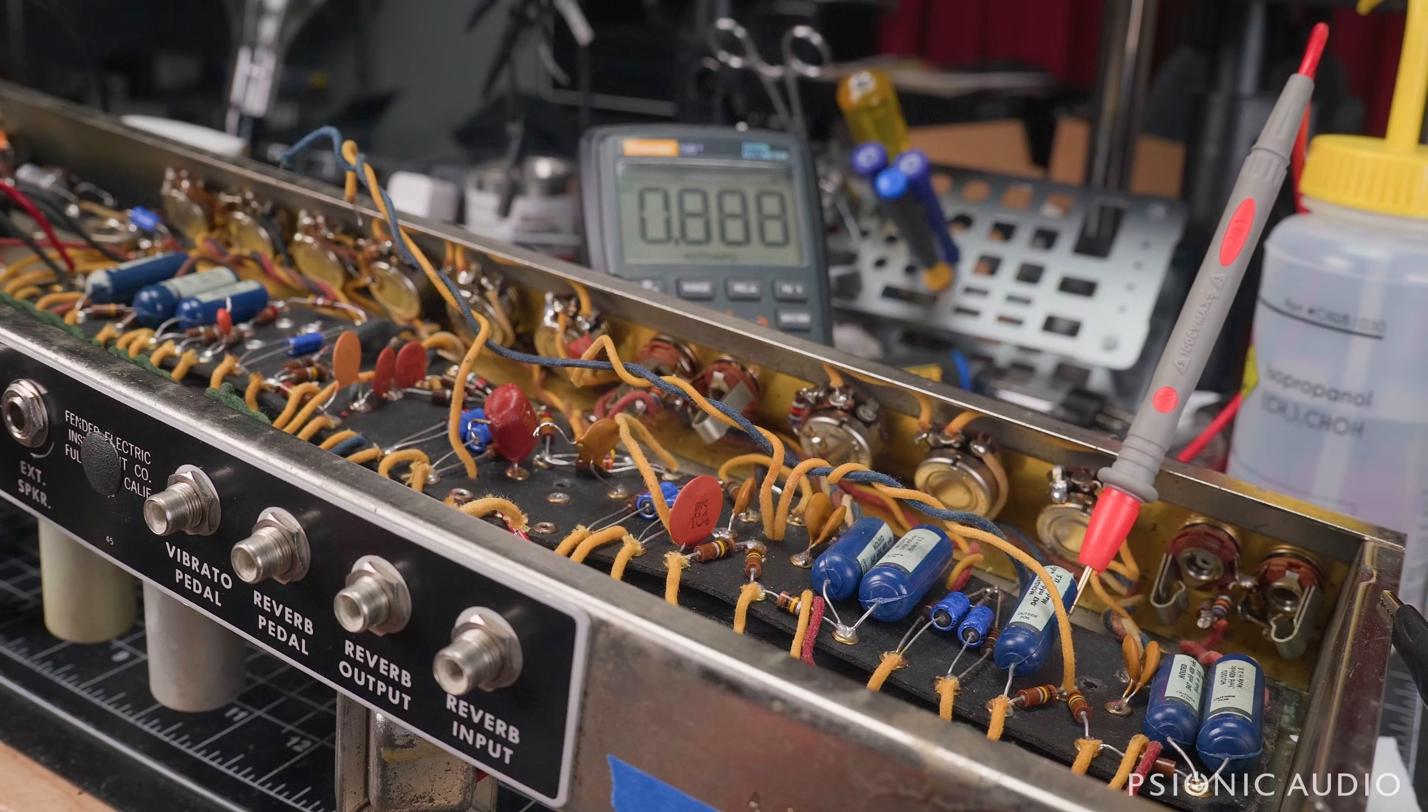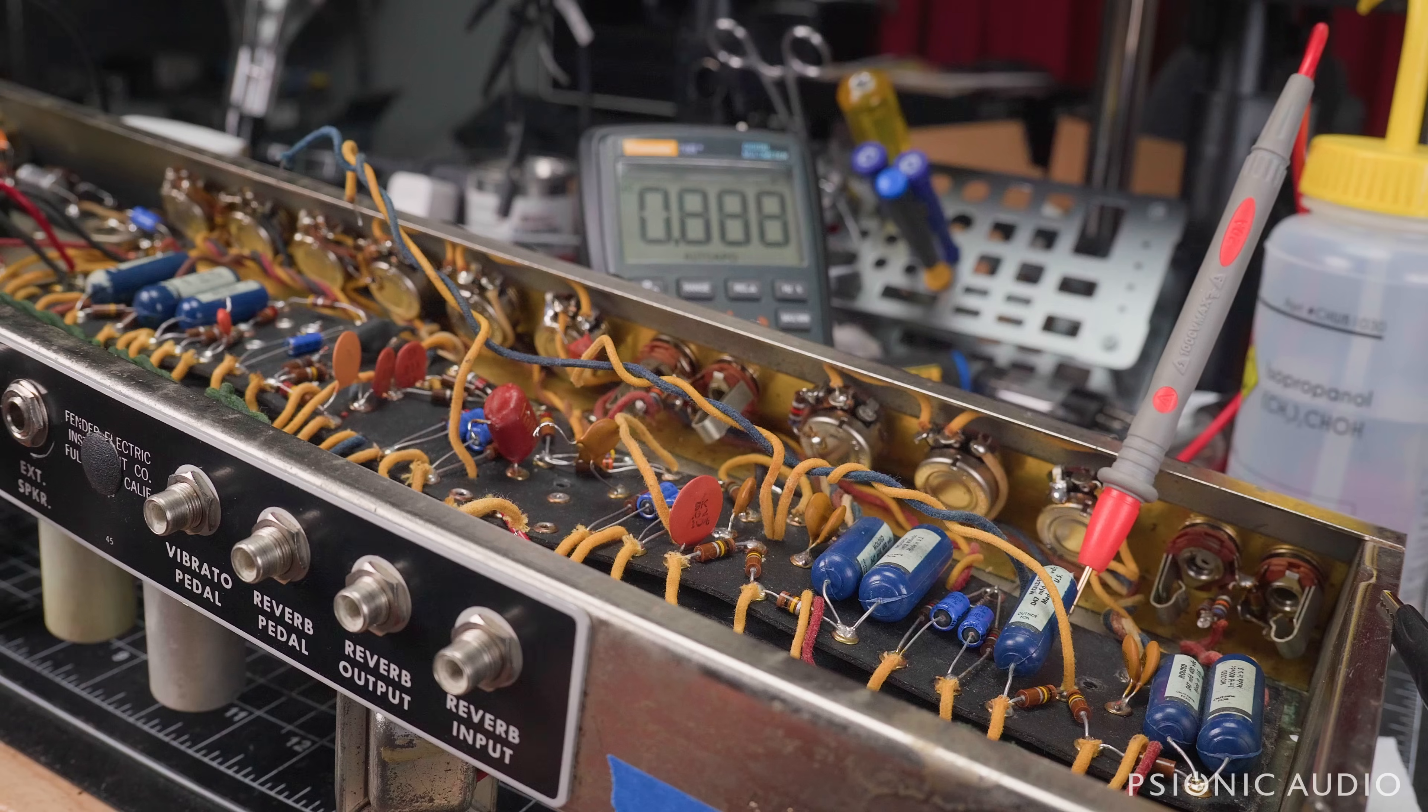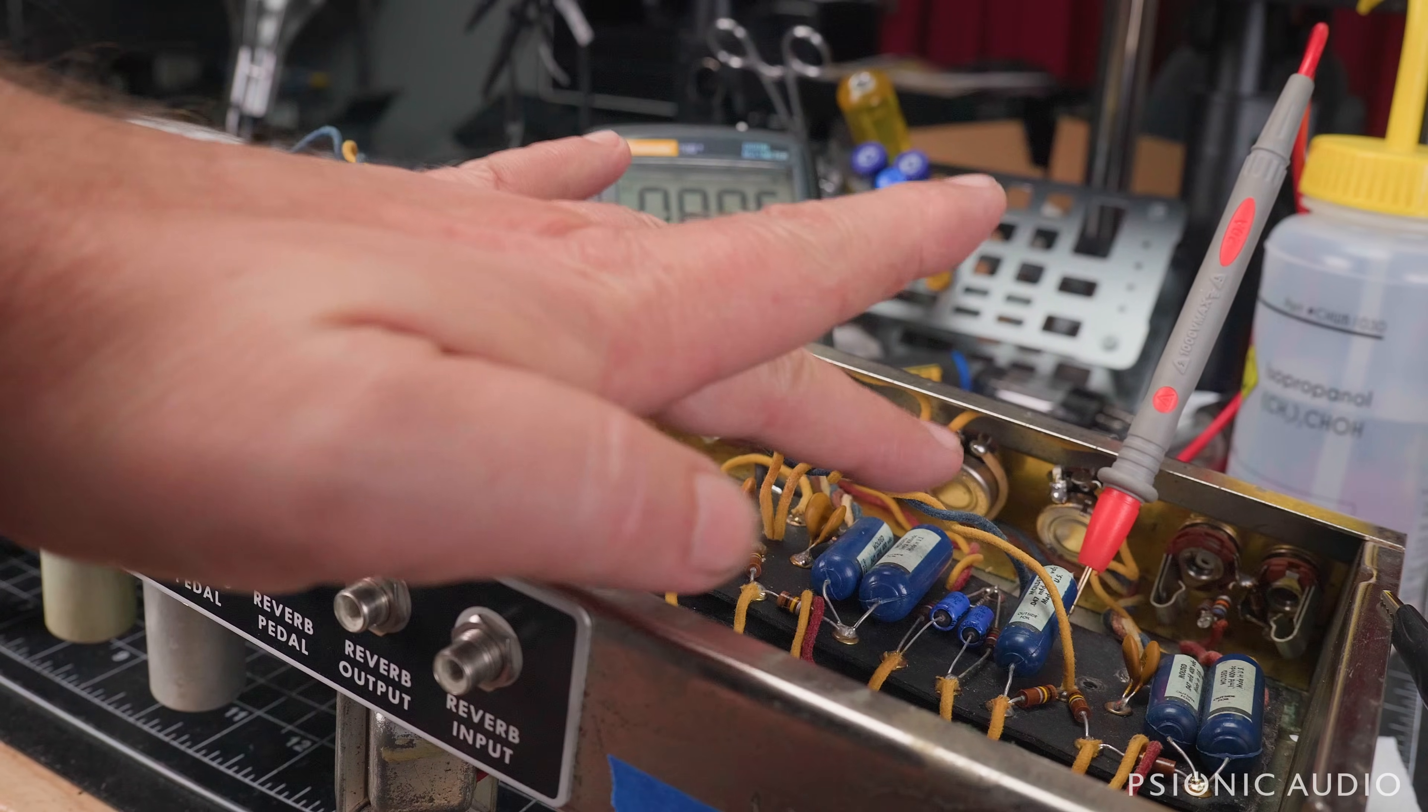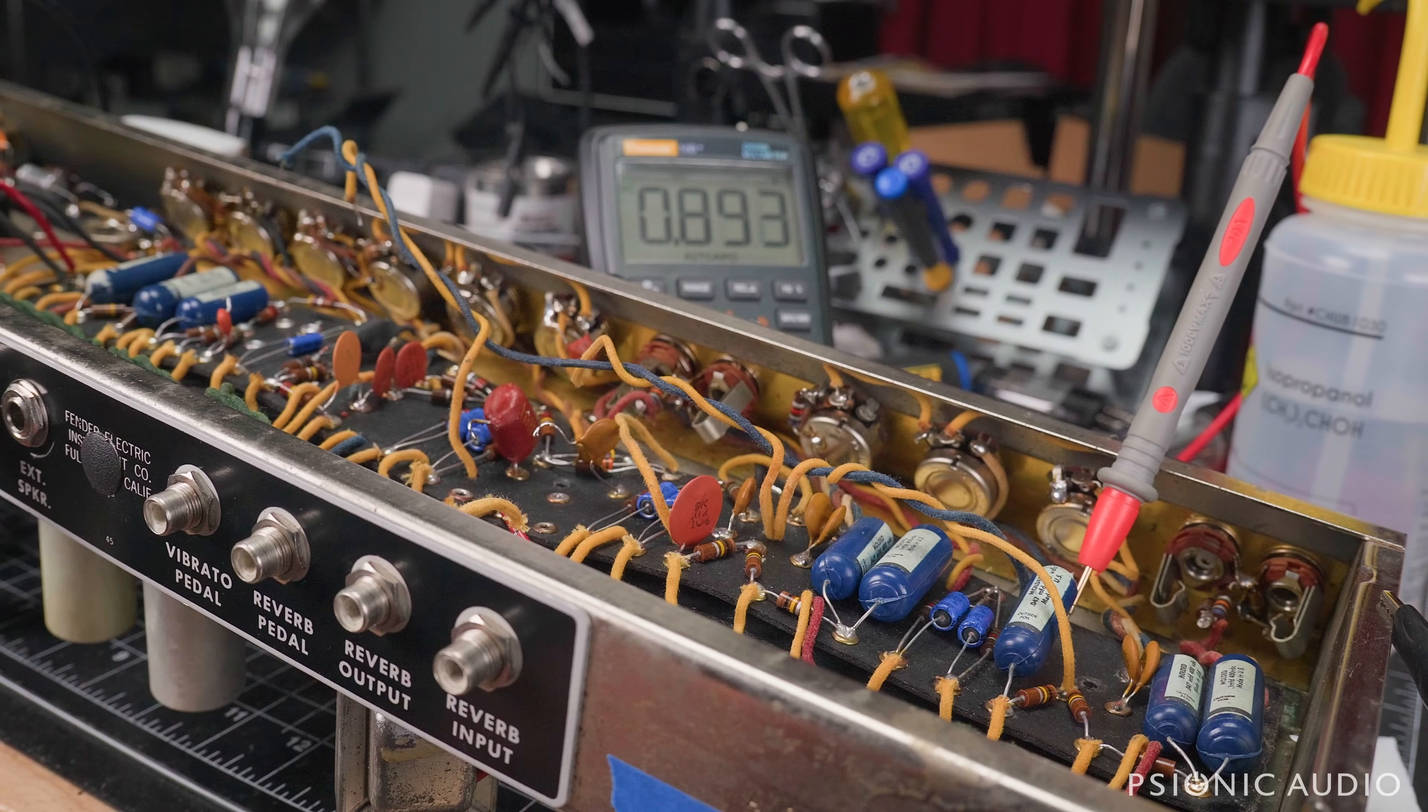It's got to fluctuate. Sometimes when it first powers up, sometimes it's over 1.5 volts, and it settles down. So what I need to do is I need to remove the yellow and blue wires from this amp as much as possible.